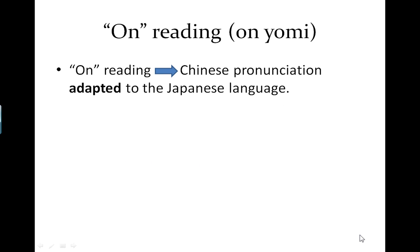Now let's talk about the on reading, or on yomi. On yomi means on reading because yomi means reading. The on reading is the Chinese pronunciation adapted to the Japanese language. When the characters arrived in Japan they already had their own Chinese pronunciation. But the Chinese language is very different from Japanese — there are sounds in Chinese which you won't find in Japanese. So the Japanese people had to adapt the Chinese sounds to their own language, and this is what the on reading is all about.